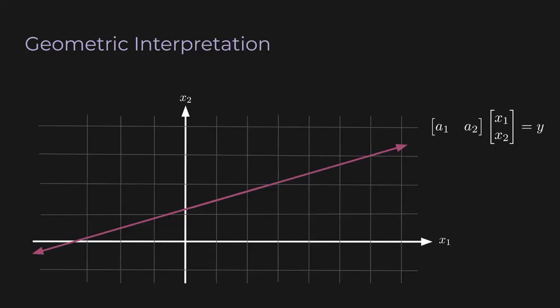Let's look at this graphically. I have some equation Ax equals y. A is a fat matrix — it's 1 by 2. In the least squares lecture, we plotted y2 against y1, the outputs. But now this is very different: we're plotting x2 against x1, the inputs. We're not interested in the output y because we can always find some x to satisfy y. This time, we're concerned about the input — we want to find one particular value of x1, x2 that will minimize the norm.